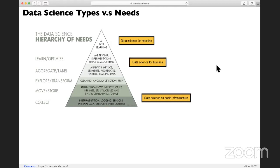If you build that part up, you can go a step further to data science for machines. It really depends on the type of company you're in. You may or may not have data science for machines. A lot of companies just have data science for humans.